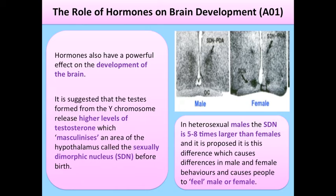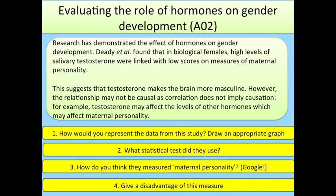Hormones also have a powerful effect on the development of the brain. It is suggested that the testes formed from the Y chromosome release higher levels of testosterone, which masculinises an area of the hypothalamus called the sexually dimorphic nucleus (SDN) before birth. In heterosexual males, the SDN is 5 to 8 times larger than in females, and it is proposed that this difference causes differences in male and female behaviours and causes people to feel male or female.